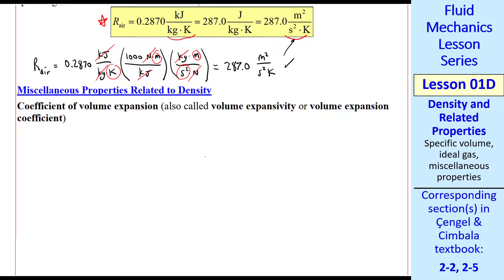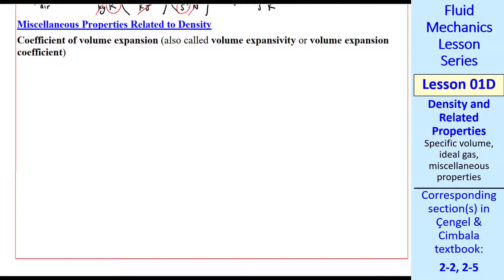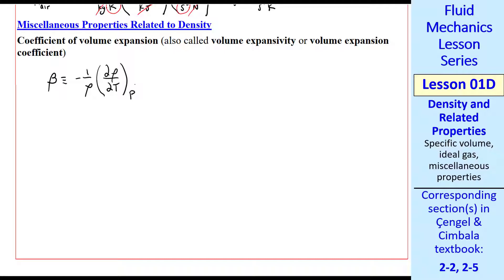Here are some miscellaneous properties. First, the coefficient of volume expansion. Here are some other names for it. We use the symbol beta. It's defined as, by the way, triple equal sign means defined as, negative 1 over rho, del rho del T at constant p. This notation is common. Partial derivative of rho with respect to temperature. Density depends on temperature and pressure. We take the partial with respect to temperature holding pressure constant.